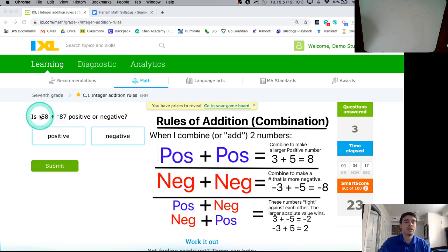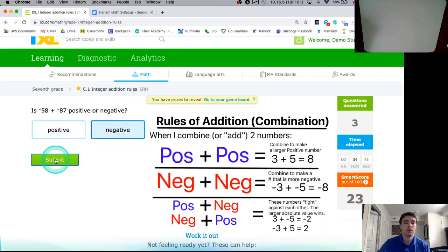All right, the next one says is -58 + -87 going to be positive or negative? And this is an example of we're adding or combining two negative numbers. We're combining the -58 adding it up with the -87. And whenever I combine two negative numbers, they're just going to combine to make something that's even more negative. So in this case I'm going to get something that's way in the negative. It's going to be way past -100 when I combine those.